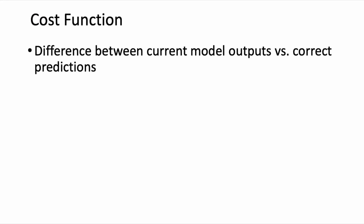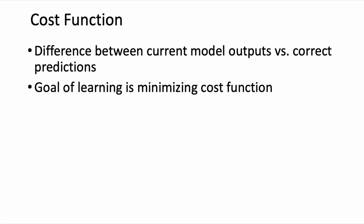The first concept that we need to introduce is that of a cost function. A neural network's cost function is like its North Star. It tells the model what the difference is between the output the neural network is currently having and the output that we want the neural network to have. The goal of learning is to minimize this cost function.